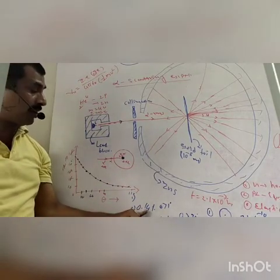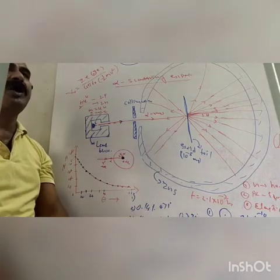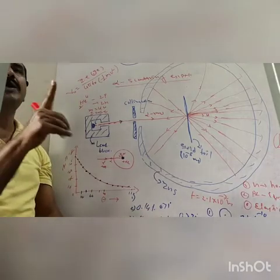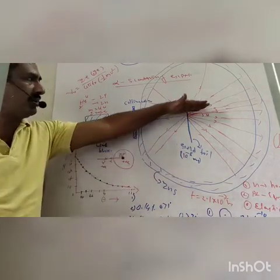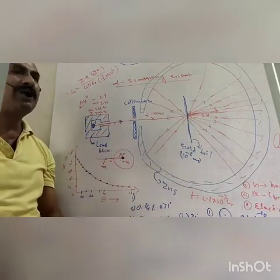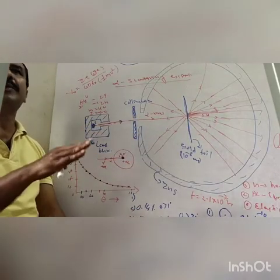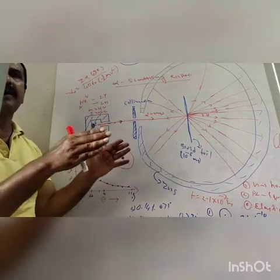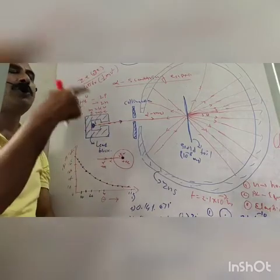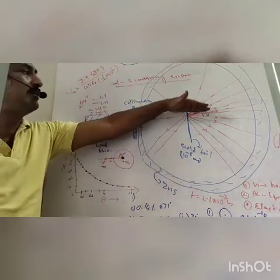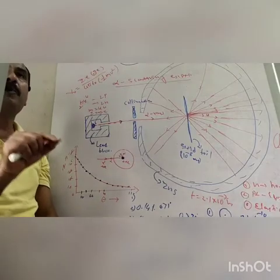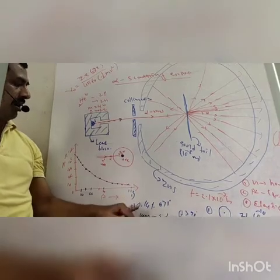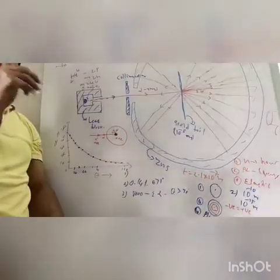Nearly 0.14% of the alpha particles get deviated at an angle more than 1 degree. More than 1 degree angle — 0.14% of the atoms deviate. That means out of 1000 alpha particles, about 14 alpha particles reflect at more than 1 degree angle.